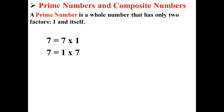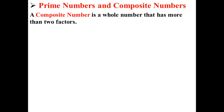to achieve seven by multiplying two numbers is seven times one or one times seven. That's because its only factors are one and itself, because it is a prime number. A composite number is a whole number that has more than two factors.